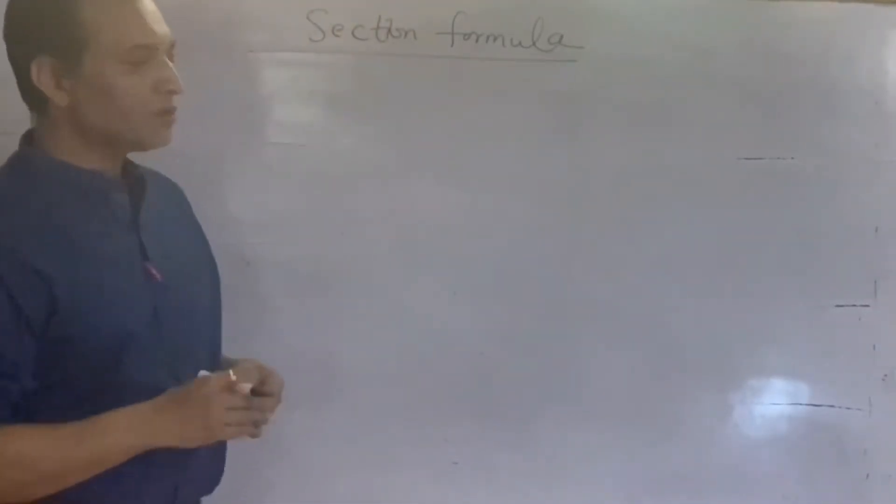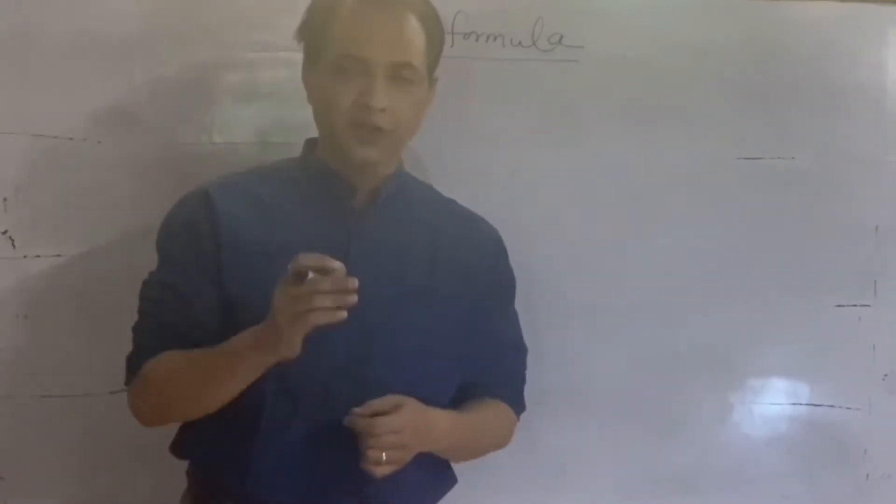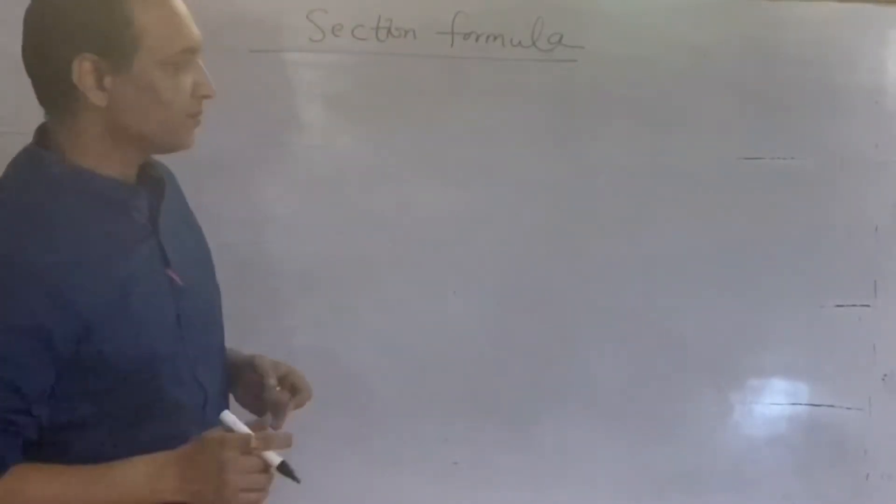तुम्हें end points पता रहेंगे, बीच का एक point रहेगा जो line को किसी ratio में divide करेगा। Ratio दिया रहेगा, तो पूछा जाएगा कि उस बीच वाले point के coordinates क्या हैं। उसके लिए अपन use करते हैं Section Formula। पहले formula पूरा derive करके बताता हूँ, फिर उसके ऊपर based questions देखेंगे।